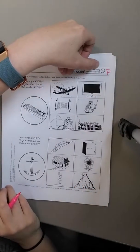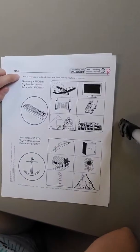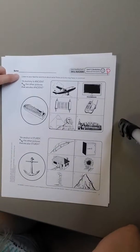Scholars, this is level three vocabulary advanced descriptor sheet P. Here we're going to, it says, listen to your teacher and think about what these pictures may have in common.